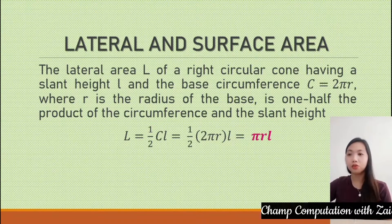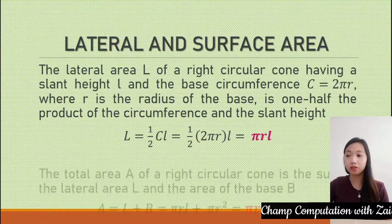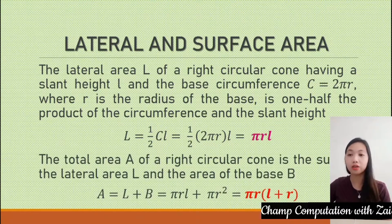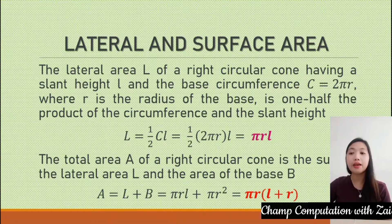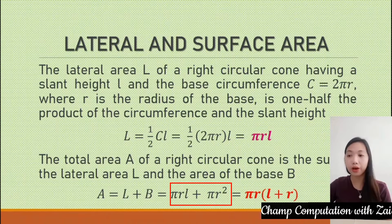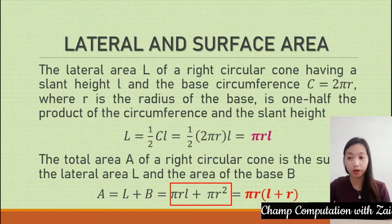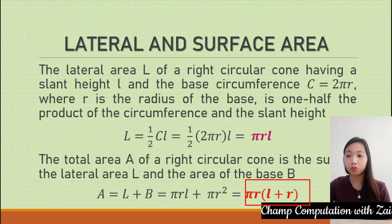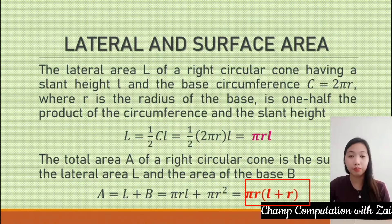For the total area, the total surface area of a right circular cone is the sum of the lateral area and the area of the base. So we have the lateral area plus the base area: πRL plus πR². Simplified, this gives πR times the quantity (L + R).